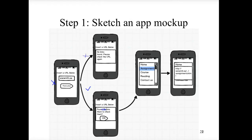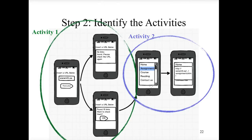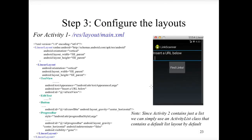If the user pushes the OK button, the app shows the links, and by clicking any link further navigation occurs. Sketching an app mockup helps you identify the main activities of your application. We find two activities here: the first activity has a text box and a button, then creates a notification with a button. The second activity is a scrolling list.